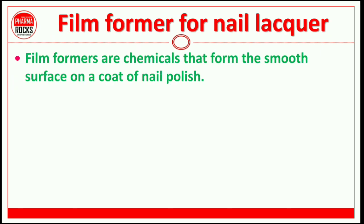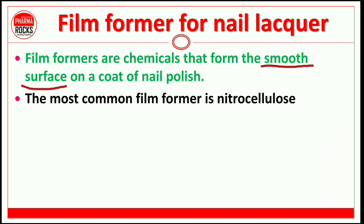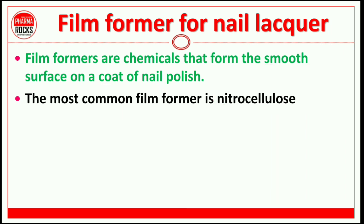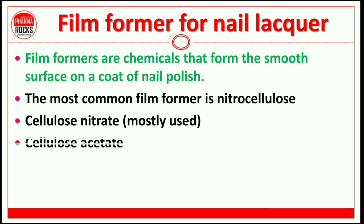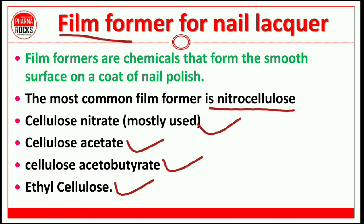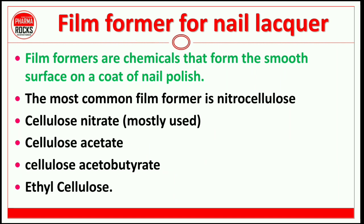Now let's check in detail about each ingredient that forms a smooth surface on the coat of nail polish. The smooth surface or coat is created by film formers. The commonly used film former is nitrocellulose, which is widely used as a film forming polymer in nail lacquer preparations. Others include cellulose nitrate, cellulose acetate, cellulose acetobutyrate, and ethyl cellulose — these are also key ingredients used as film formers in nail lacquer preparations.